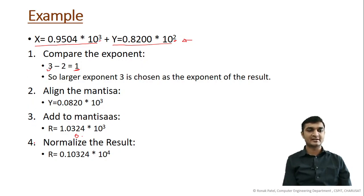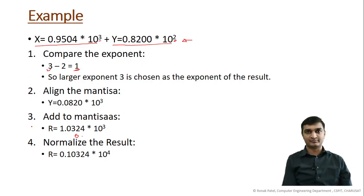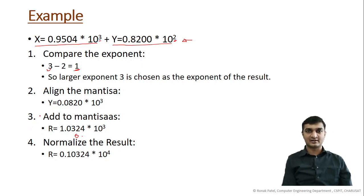We can consider this operation as four segments: segment 1 (compare exponents), segment 2 (align mantissa), segment 3 (add mantissa), and segment 4 (normalize result). These operations can be performed in parallel, which is how we achieve parallelism and improve performance.